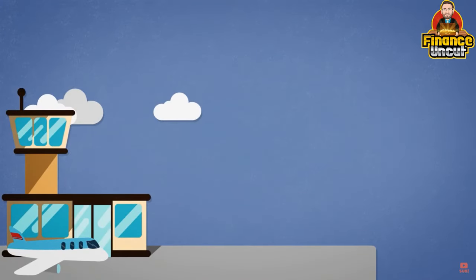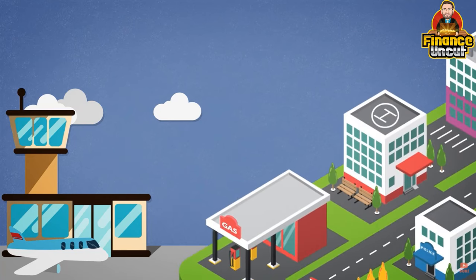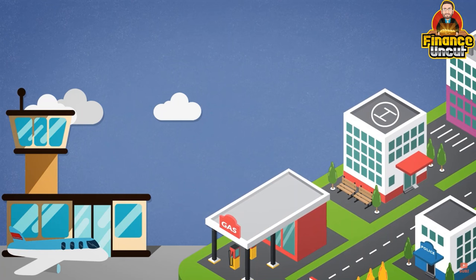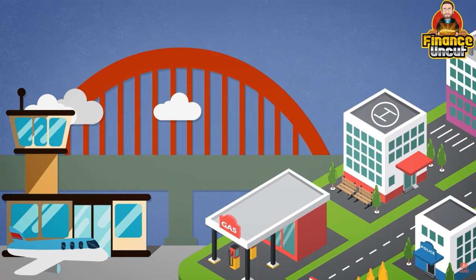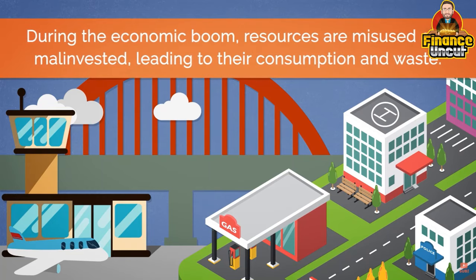That is why, during a crisis, we can see plenty of unused newly built airports, empty neighborhoods of newly built houses that no one wants to buy, or bridges leading to nowhere. During the economic boom, resources are misused and mal-invested, leading to their consumption and waste. This means they are not used properly at the present and won't be able to be used in the future, leaving us with a lower future standard of living.